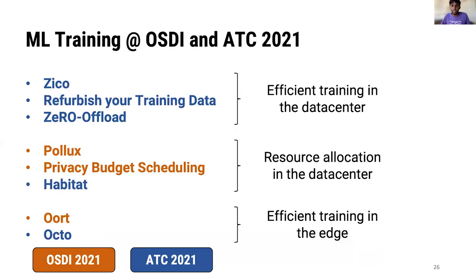To conclude, we see that machine learning training is an emerging workload with incredibly important applications. The machine learning training papers at OSDI and ATC this year address various aspects of this process. For example, Zico, Refurbish Your Training Data, and Zero Offload try to improve the performance of training given resources in the data center. Other works like Pollux, Privacy Budget Scheduling, and Habitat try to make it easier to allocate resources to various jobs, while Oort and Octo try to increase the efficiency of training on the edge. Thanks for listening.